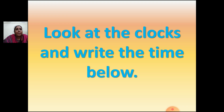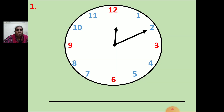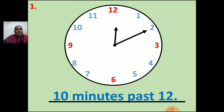Now look at the clocks and write the time below. You have to see the clock and tell me what time it is. The hour hand is between 12 and 1, and the long hand is pointing to 2. So how many minutes? 10 minutes. So what will be the time? First you write minutes, then hours: 10 minutes past 12.